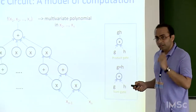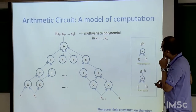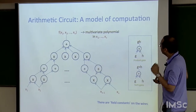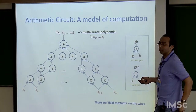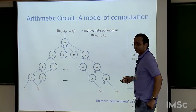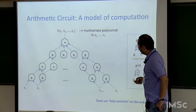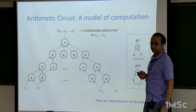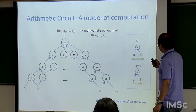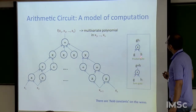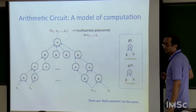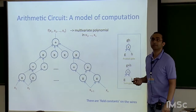Recall that arithmetic circuits are a model of computation — just like Boolean circuits, but we have addition and multiplication gates instead of OR and AND gates. At the leaves we have variables, and the output is naturally a multivariate polynomial. A product gate takes a product; a sum gate takes a sum of the polynomials.